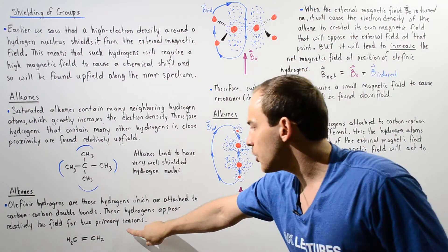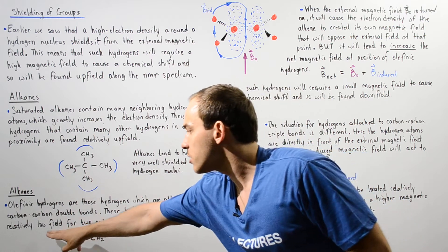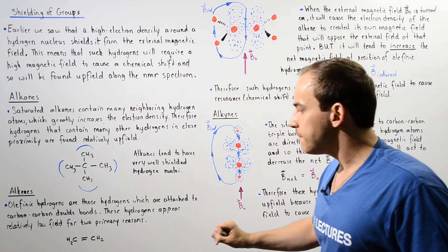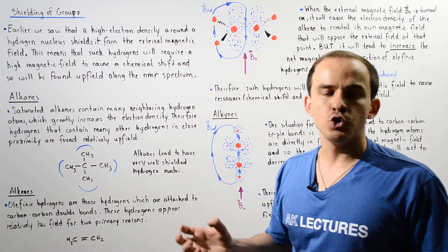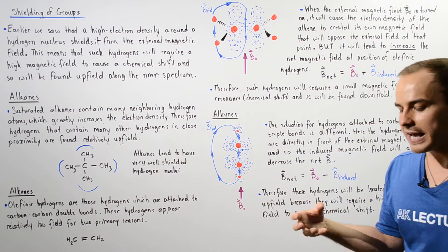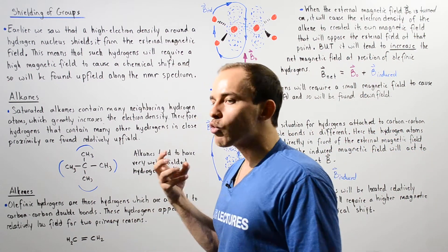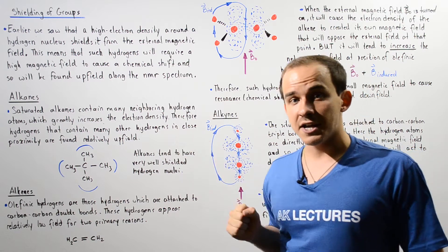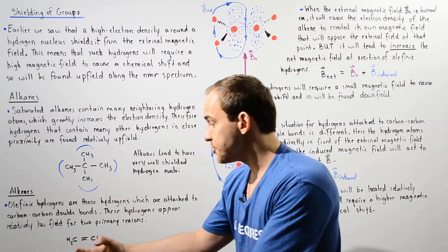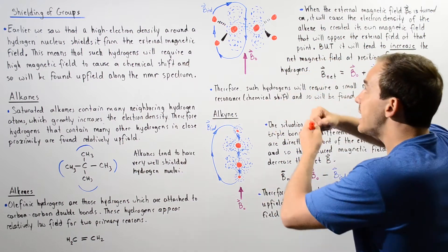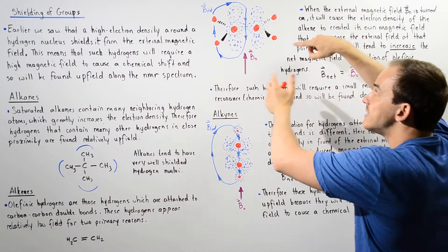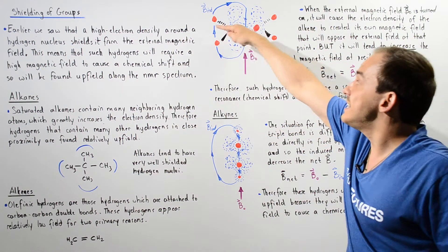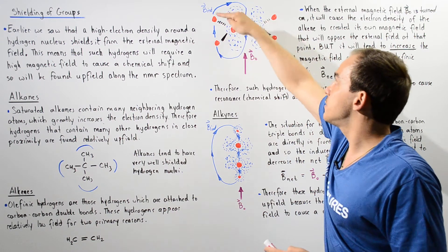The second reason has to do with the fact that these bonds are sp2 hybridized. sp2 hybridized bonds contain a relatively large S character, and the greater the S character, the more likely that the carbons will pull that electron density. So basically these carbons pull the electron density of these H atoms and that de-shields the magnetic field around these H atoms.